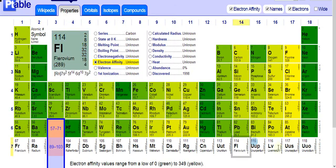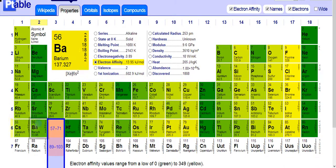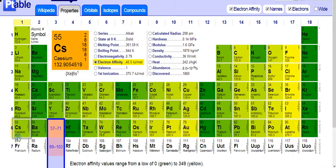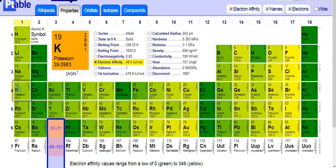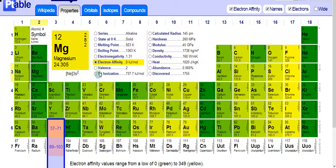Electron affinity, it decreases going right to left and top to bottom. As you can see right here, 45.5, 469, 48. As you can see, it decreases as you go down, 72 and 59.